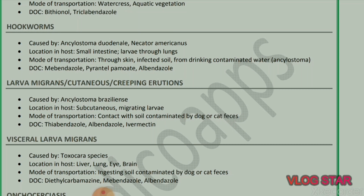Next parasite: Hookworms — Ancylostoma duodenale and Necator americanus. Location in host: small intestine; larvae pass through lungs to small intestine. Mode of transmission: through skin from infected soil, or drinking contaminated water. Drug of choice: mebendazole, pyrantel pamoate, and albendazole.